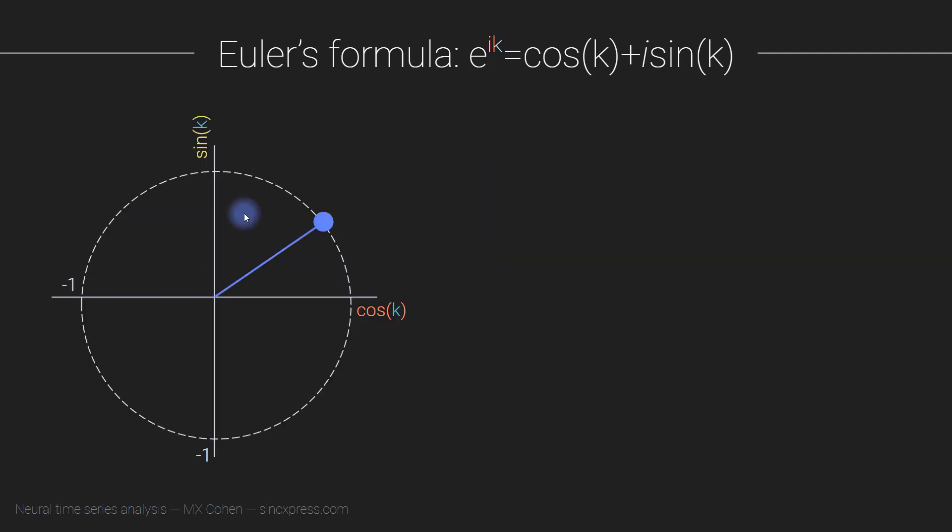So we have discovered that this line here can be represented as this expression here. So e to the ik equals cosine k plus i sine k. So the problem with this or the limitation of this formulation here is that we are limited to numbers or points that are on this unit circle, we can never get off the unit circle.